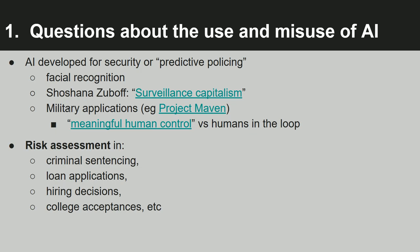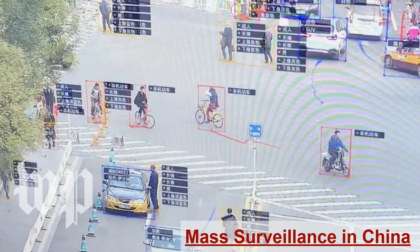These technologies also have broader applications in the justice system — things like criminal sentencing. Banks are deciding who to grant loans to based on machine learning software. Also hiring decisions and college acceptances: colleges are increasingly using AI software to decide who to accept, and businesses are using it to decide who to hire. This kind of technology ends up affecting a lot of people, and it's important to know how it works and what impact it'll have on our lives.